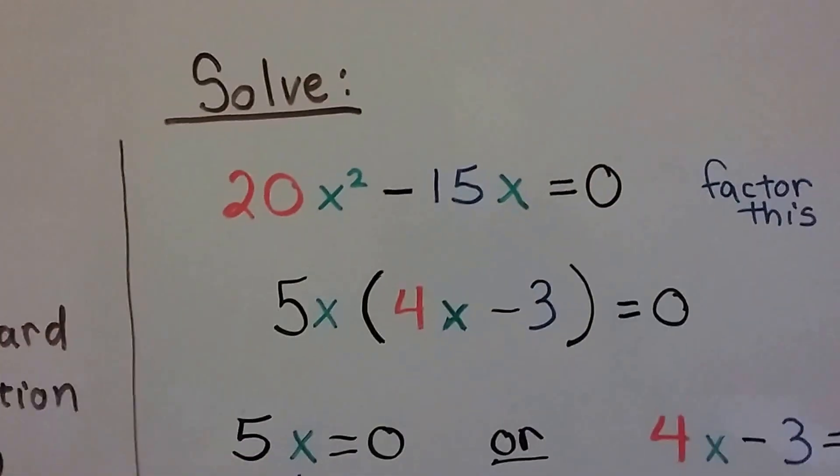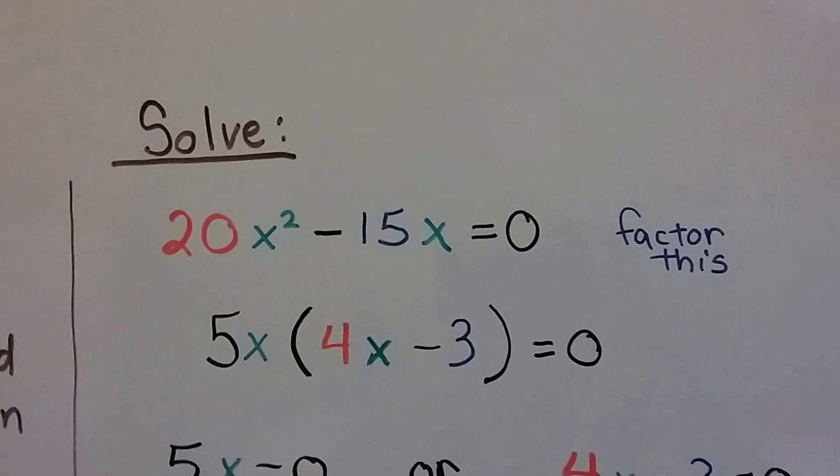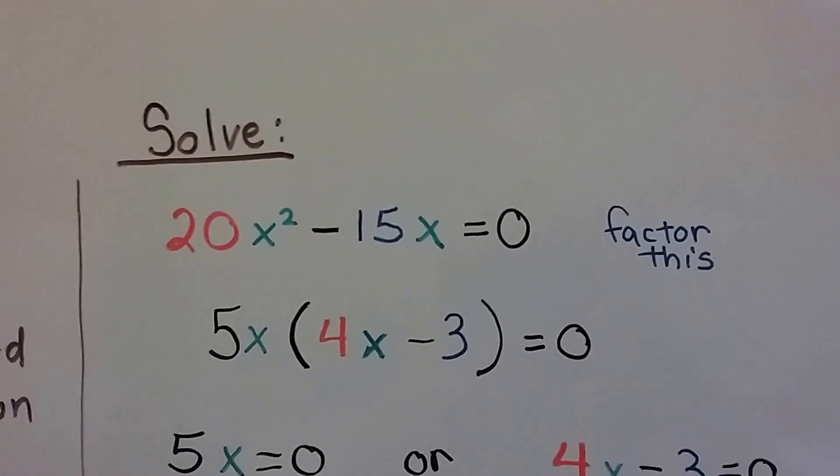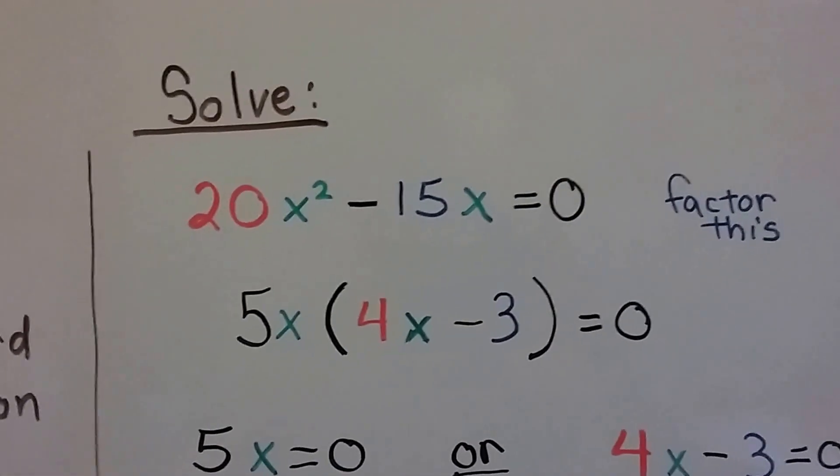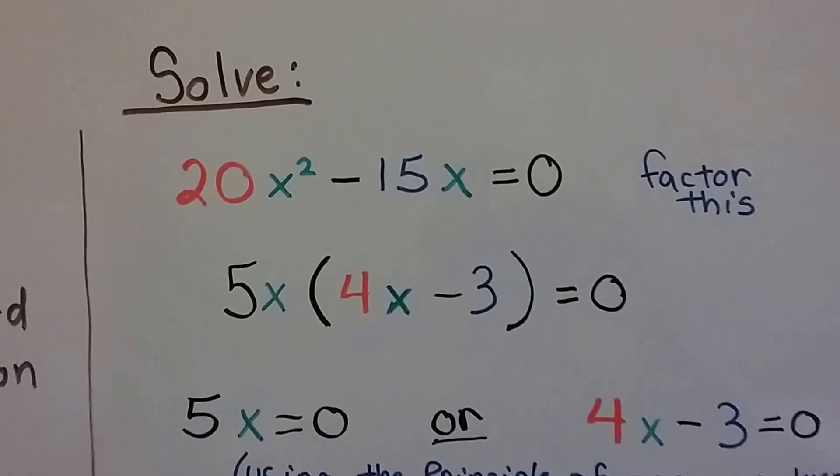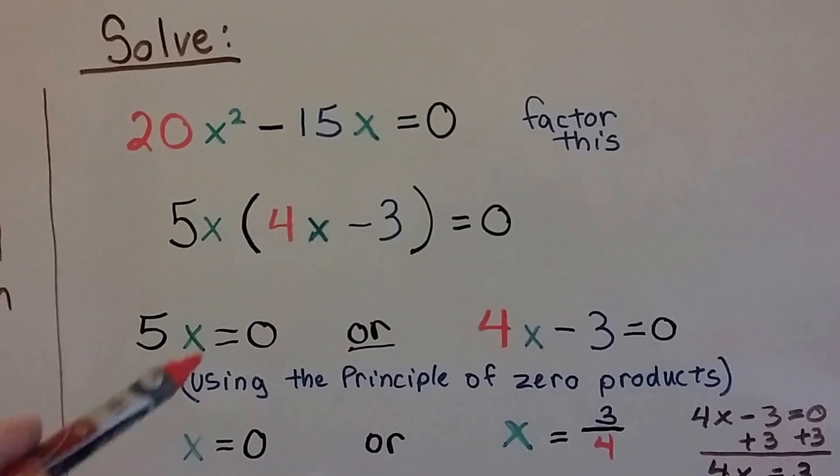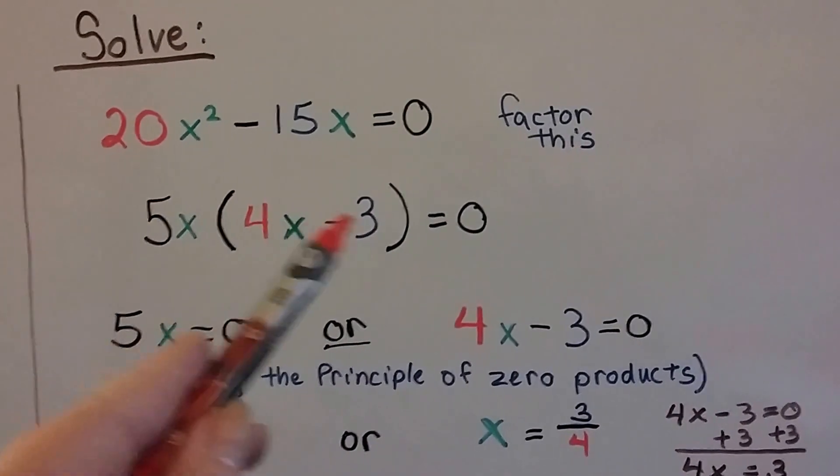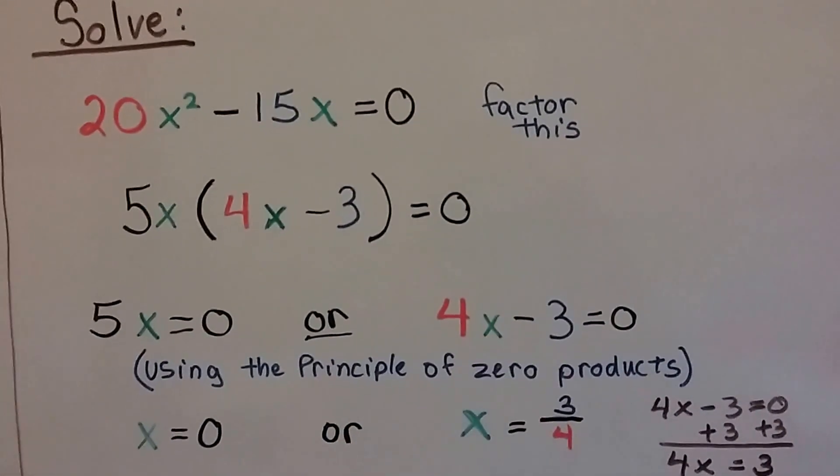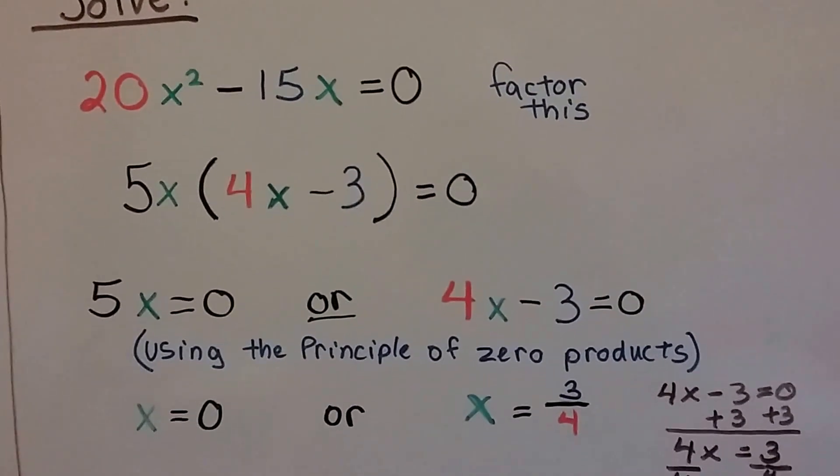For this equation, 20x squared minus 15x equals zero, we factor it first and can factor out as 5x times 4x minus 3 equals zero. So we set this to equal zero on the outside of the parentheses, and the side that's inside the parentheses we set to equal zero. That's using the principle of zero products.